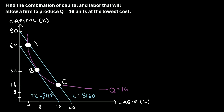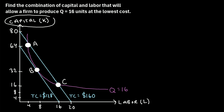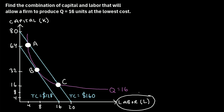So here's the idea. Some firm wants to produce exactly 16 units of some good, and they can use a combination of capital and labor to do so. If we consider this graph, on the y-axis we have capital — the units of capital used by the firm. And on the x-axis we have labor — the total units of labor used by the firm. To answer this question, there are two types of lines in this graph that we have to understand.